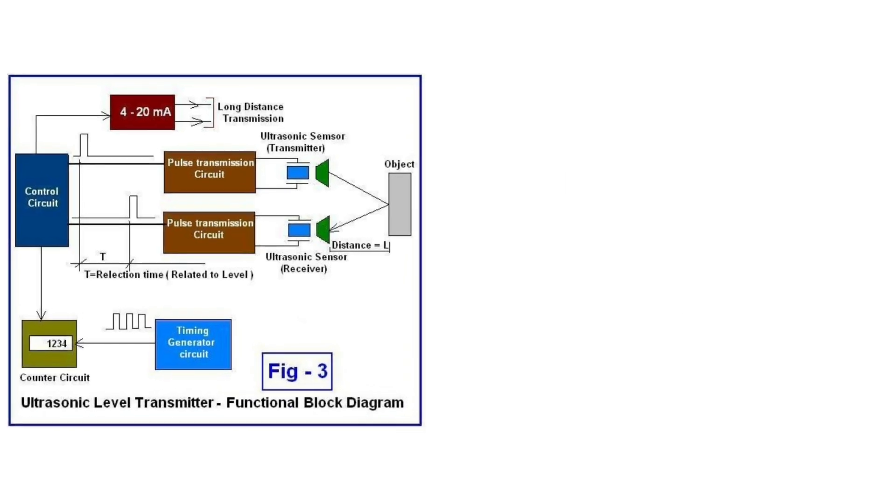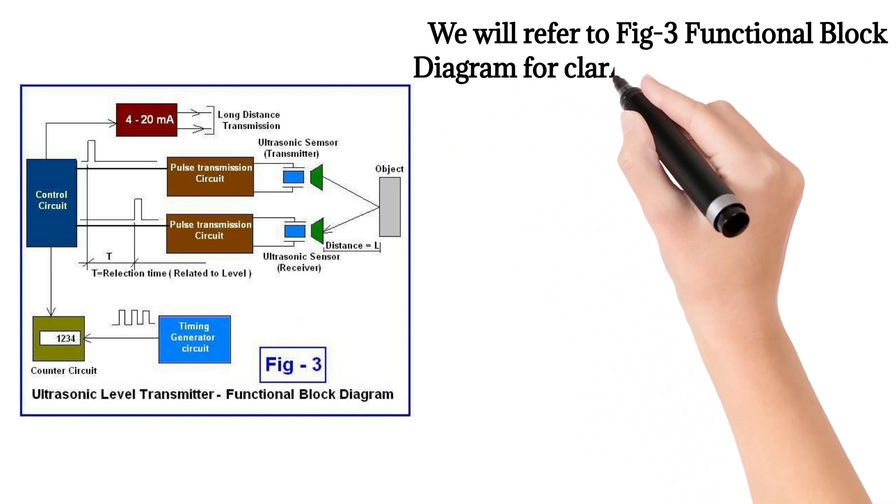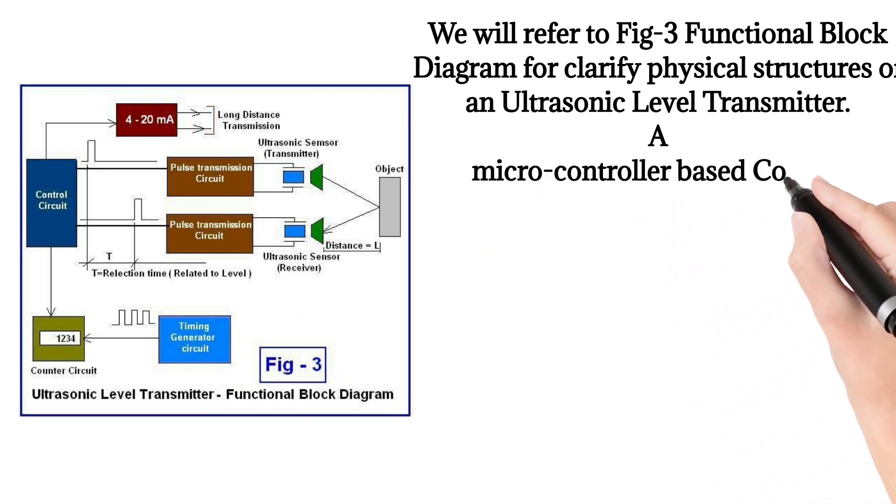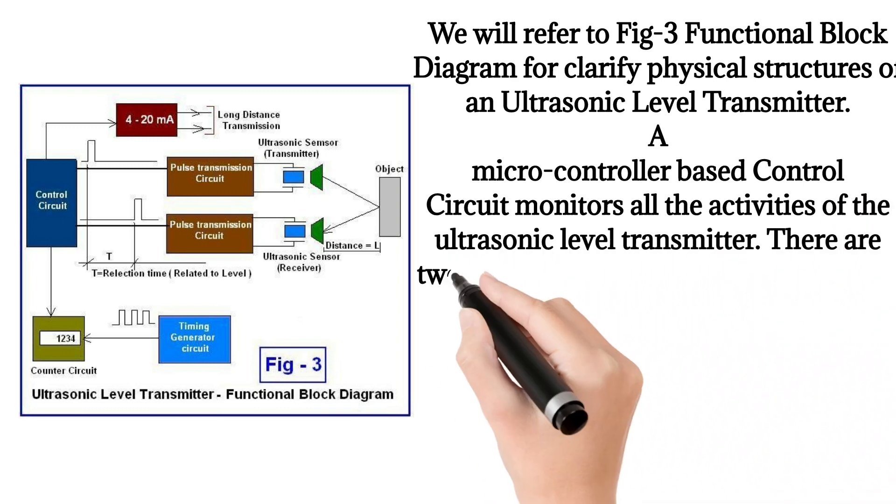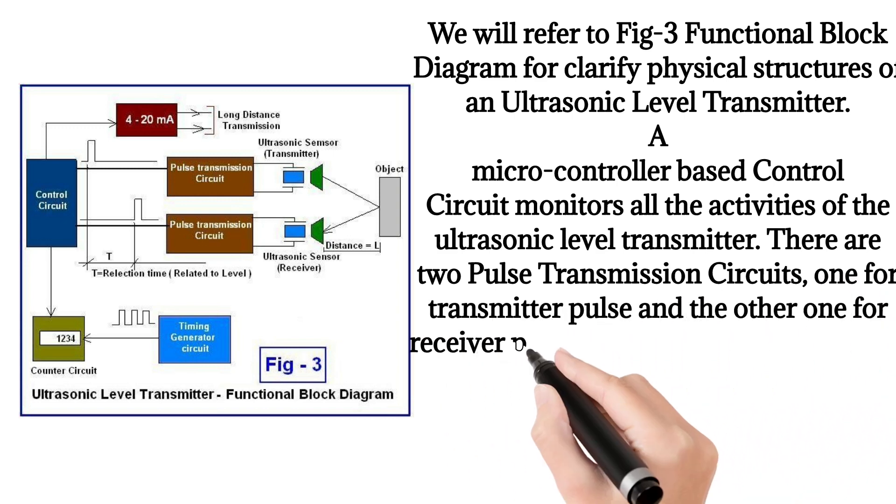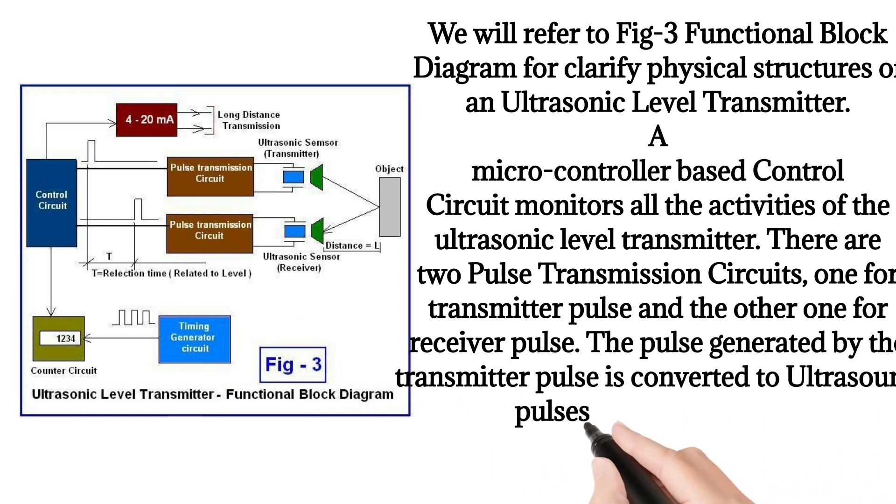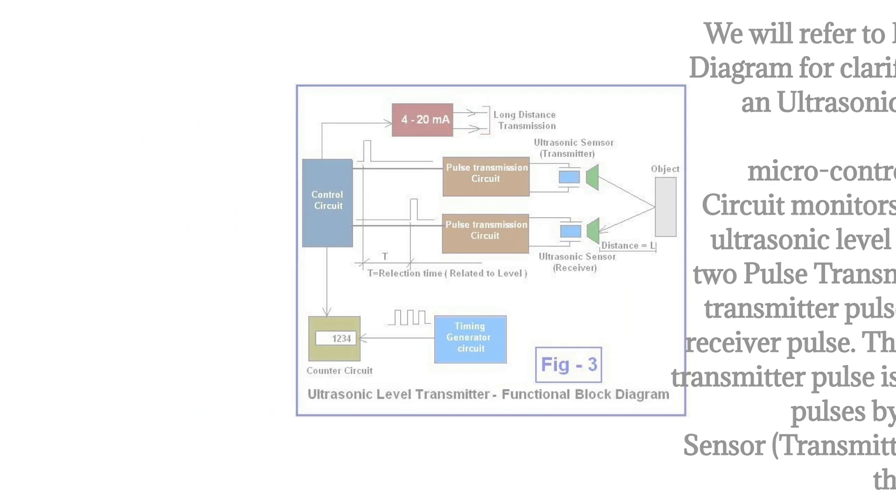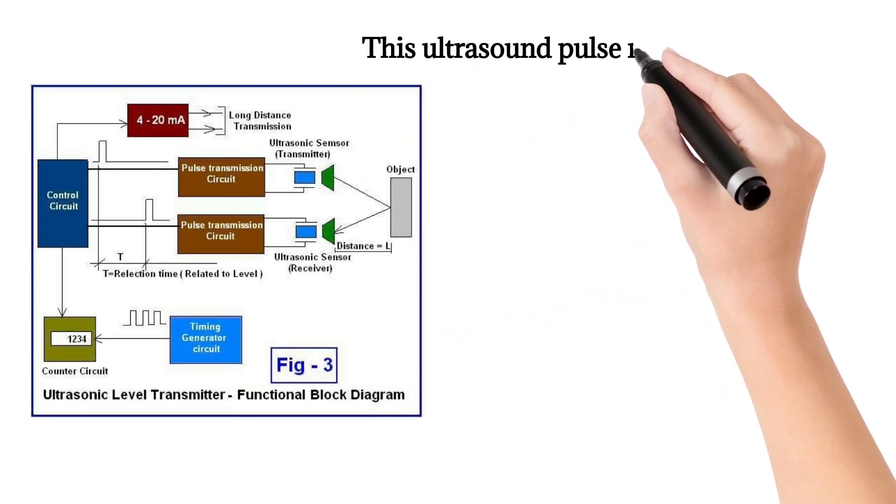We will refer to Figure 3 functional block diagram to clarify physical structures of an ultrasonic level transmitter. A microcontroller-based control circuit monitors all activities of the ultrasonic level transmitter. There are two pulse transmission circuits: one for transmitter pulse and the other one for receiver pulse. The pulse generated by the transmitter is converted to ultrasound pulses by the ultrasonic sensor transmitter and targeted towards the object.